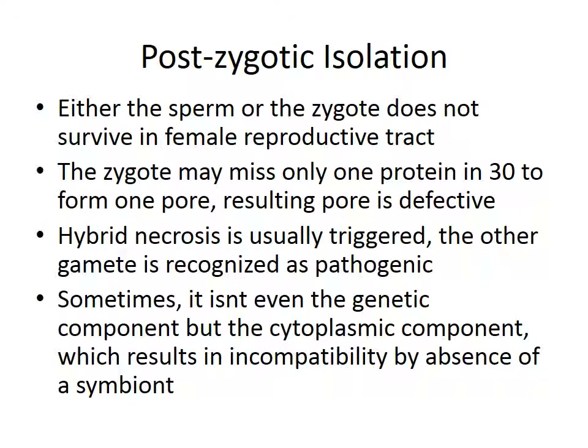There are other ways that postzygotic isolation is ensured. Either the sperm or the zygote does not survive in the female reproductive tract — it is killed off. The zygote may miss just one protein out of 30 to form one pore, and the resulting pore may be defective, so the zygote just won't develop — missing just one thing triggers hybrid necrosis because the other gamete is recognized as pathogenic. Sometimes it isn't even the genetic component but the cytoplasmic component, which results in incompatibility by absence of a symbiont — even if the genetic components match, the different cytoplasm means the offspring won't develop because a symbiont is absent.